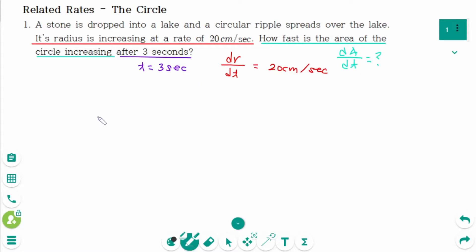The formula of the area of the circle is A equals pi r squared. We take the derivative of the equation with respect to t: d/dt of A equals d/dt of pi r squared.